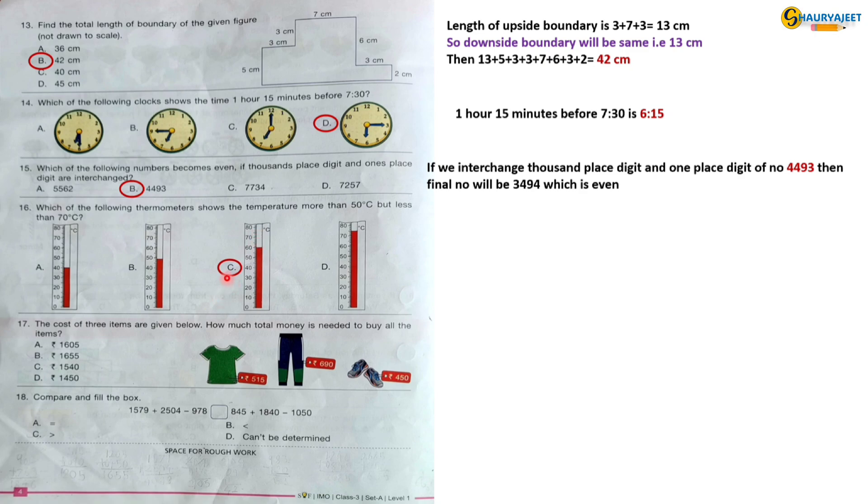Question 17: The cost of 3 items are given below. How much total money is needed to buy all the items? 515 plus 690 plus 450 is equal to 1655. So the correct option is option B, 1655.